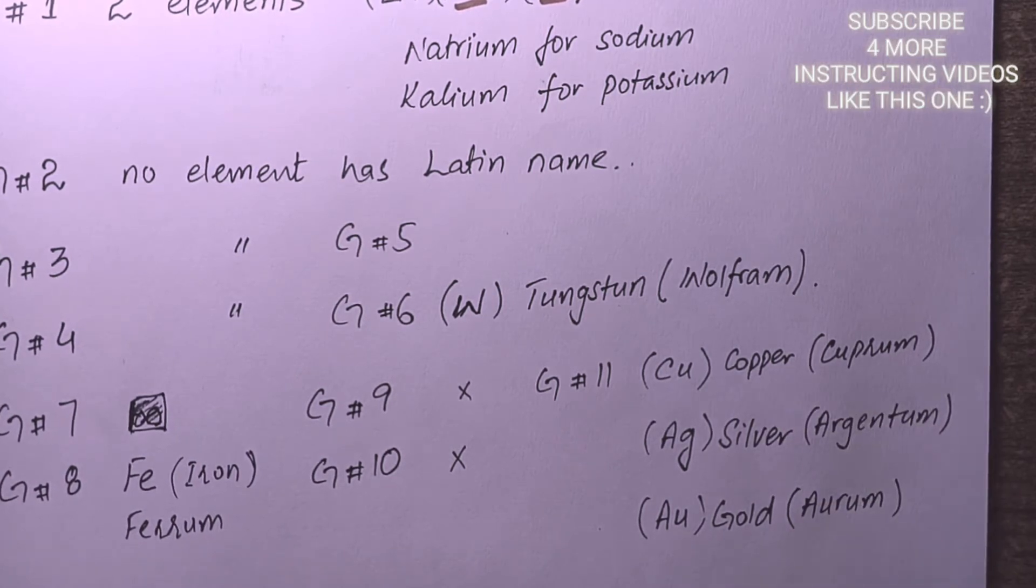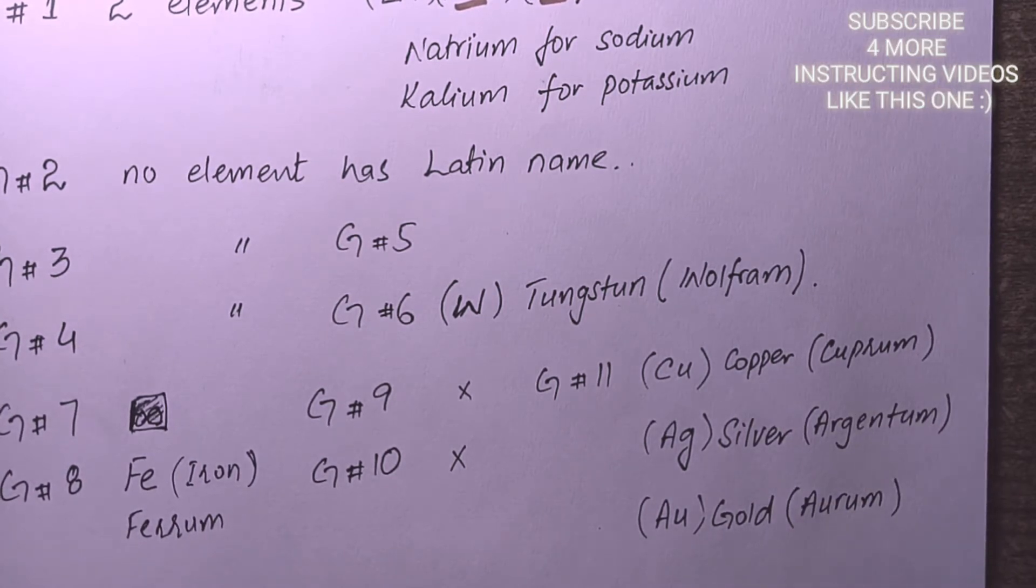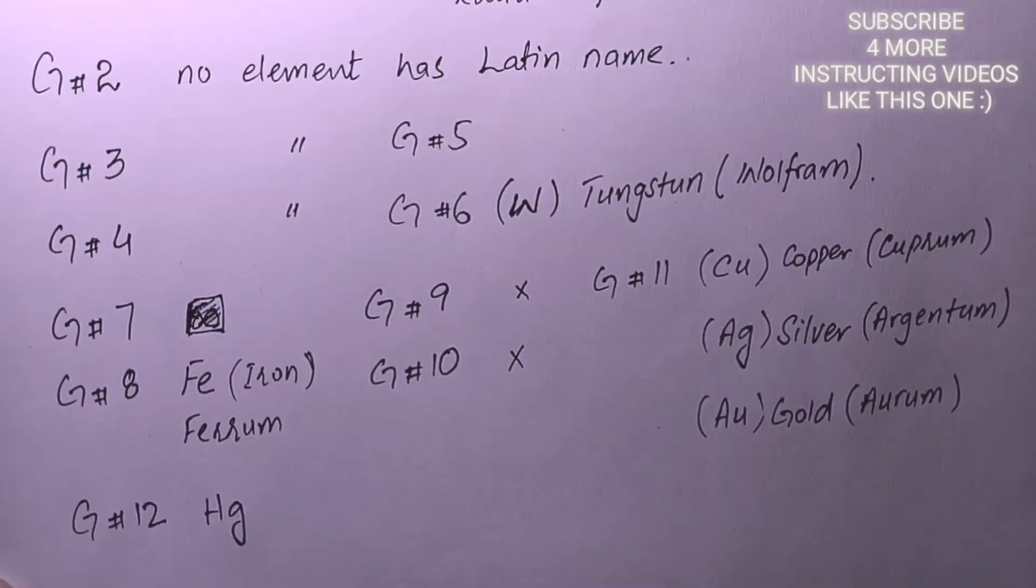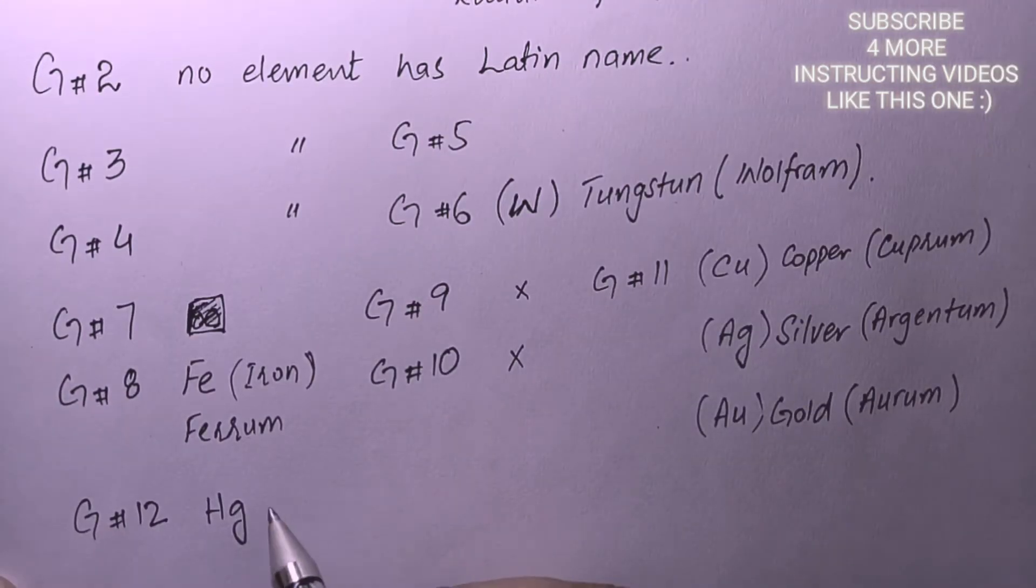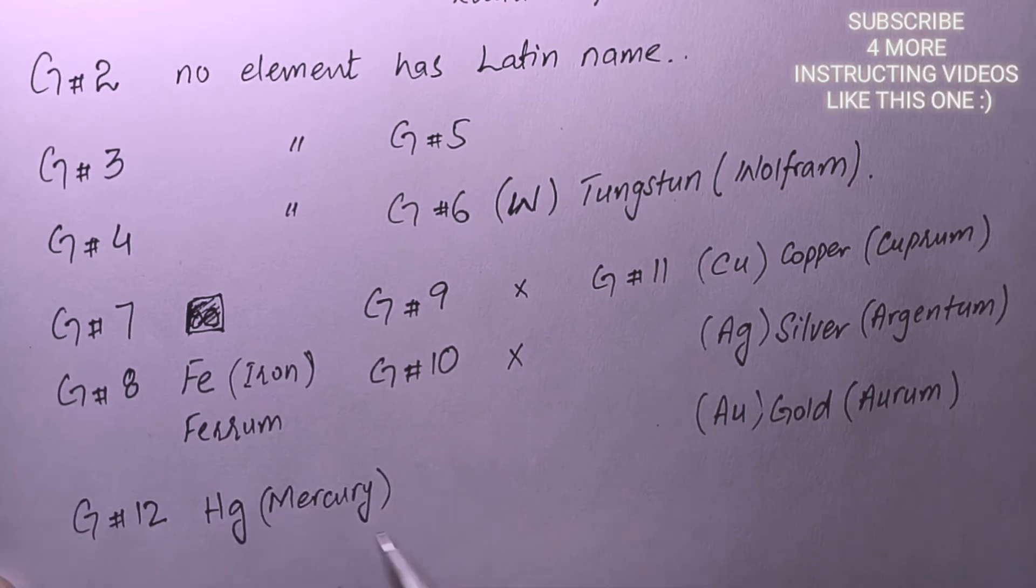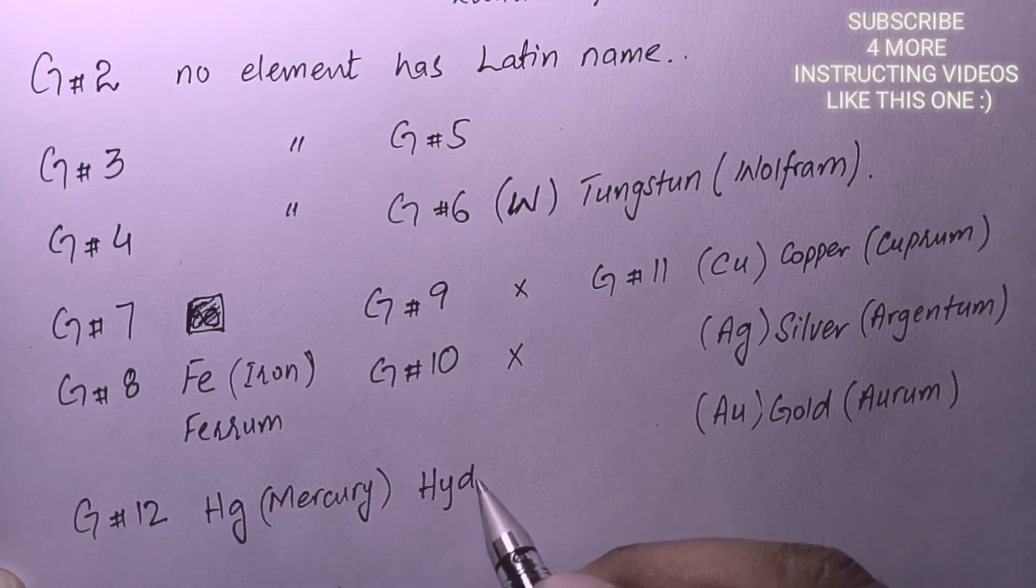In group 12 we have an element named Mercury, and we have a Latin name for this element as well. This is basically Hydrargyrum.